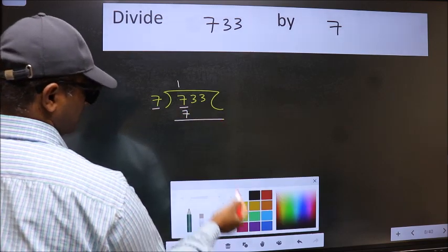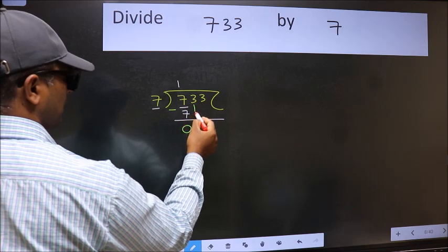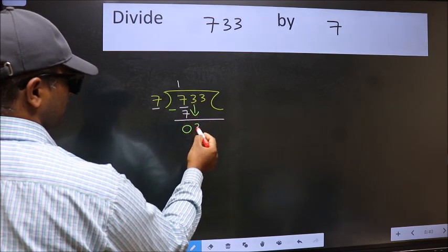Now we should subtract. We get 0. After this bring down the beside number. So 3 down.